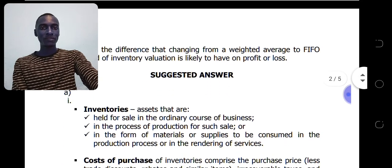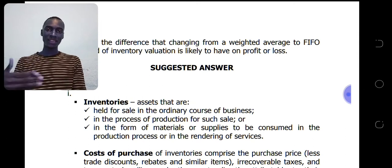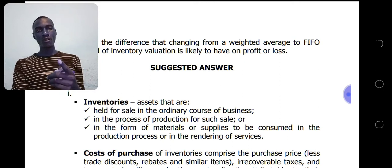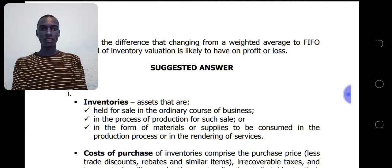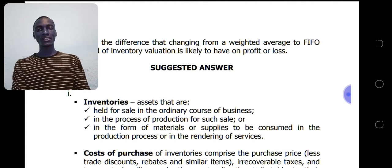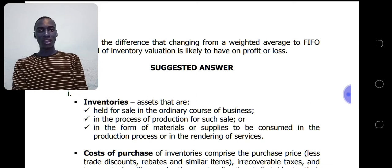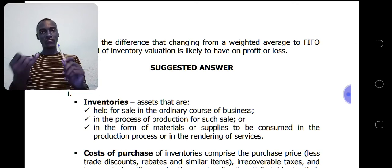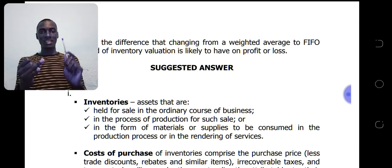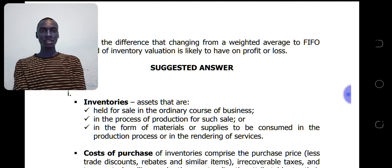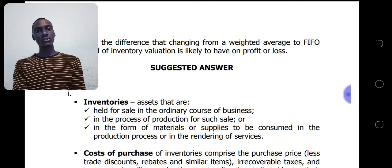Let us go through this question. We start by defining what inventories are. Inventories are assets held for sale in the ordinary course of business, in the process of production for such a sale, or in the form of materials or supplies to be consumed in the production process or in the rendering of services. That is how inventories are defined according to IAS2. You should define terms according to the relevant standards, not your own understanding.